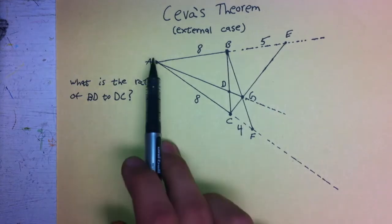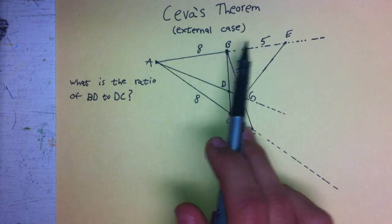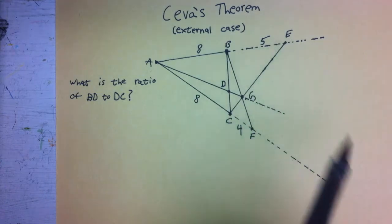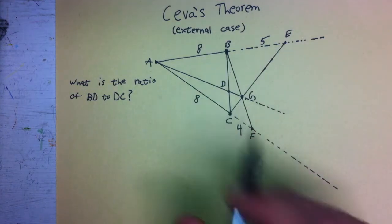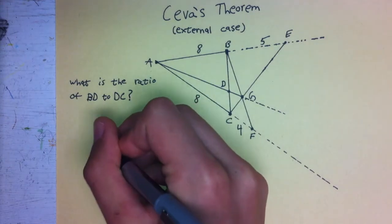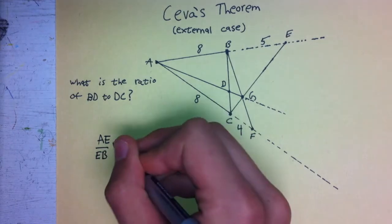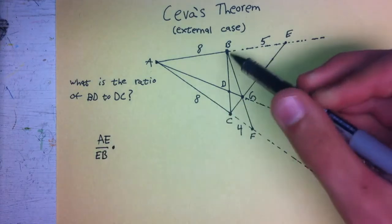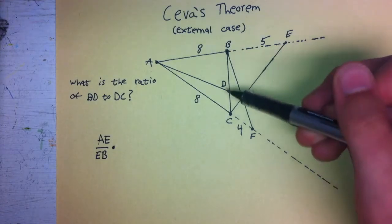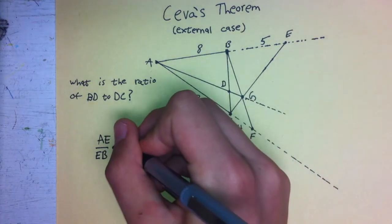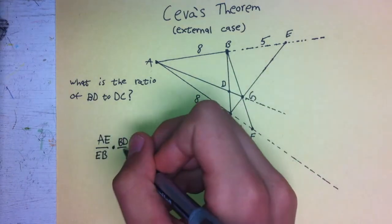We're going to begin with vertice A, and we're going to go from the vertice along this line to the first intersection point, which is point E. Then from the intersection point, we're going to go back to the next vertice. So the beginning of the expression will be AE divided by EB, and then it will be multiplied by the length from the vertice to the next intersection point, which is BD, and then from the intersection point to the next vertice is DC, so it will be divided by DC.